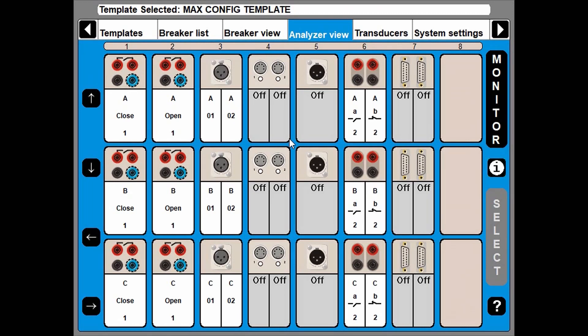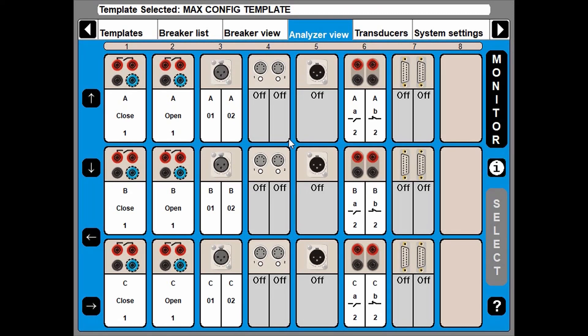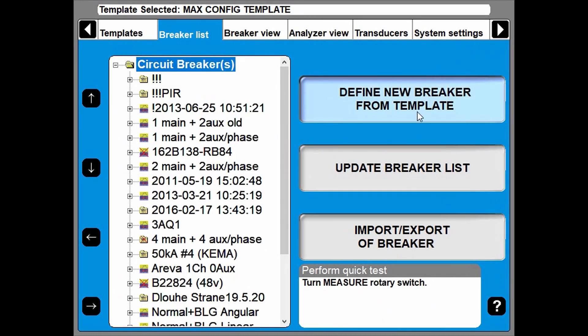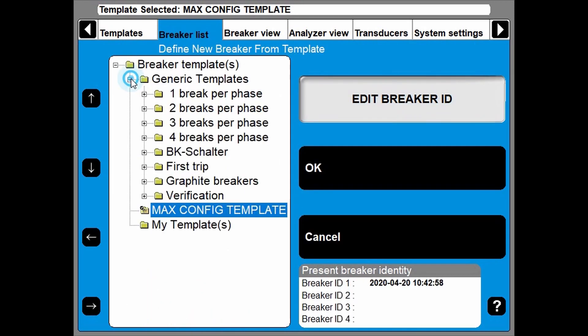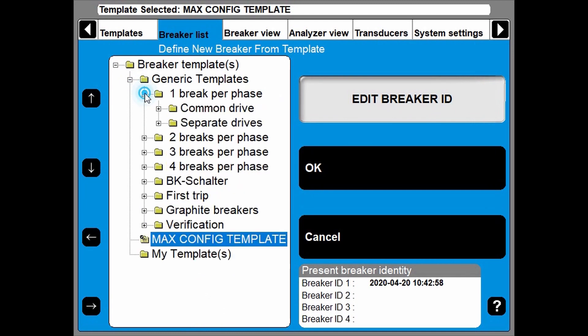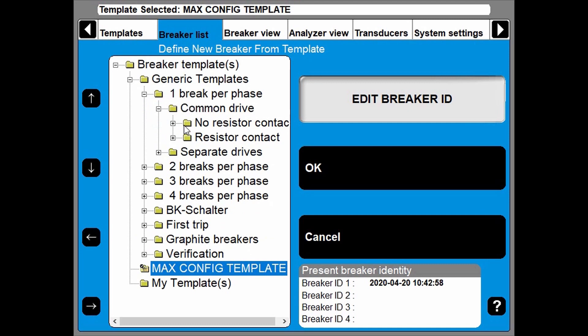You start your CARBA local in the instrument. You go to the breaker list. You define a new breaker from template. And you can try with a generic template. One breaker phase, common drive.